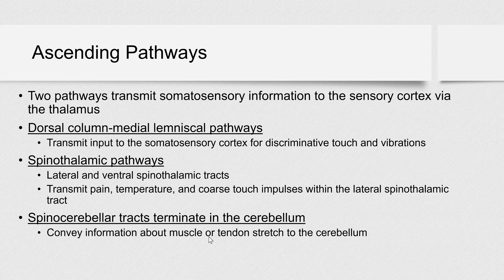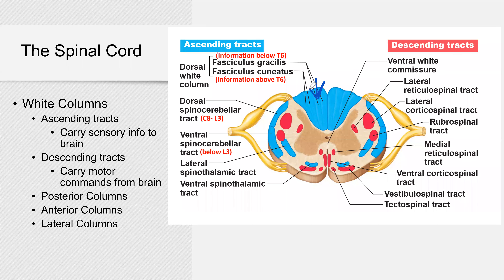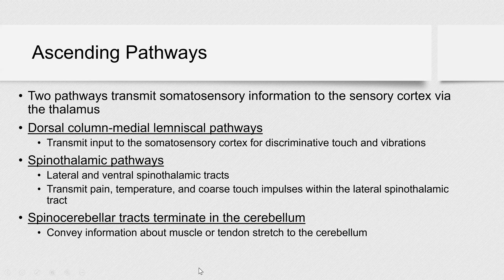Two pathways transmit sensory information to the sensory cortex via the thalamus. We have the dorsal column medial lemniscus pathway — that's the dorsal white column — which transmits information about touch and vibration. The spinothalamic pathway goes from spinal cord to thalamus, and from thalamus you still go to the cerebral cortex. This tract transmits information about pain and temperature, as well as coarse touch.